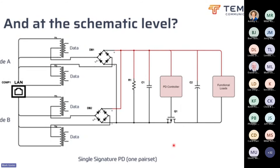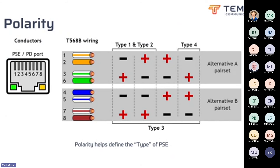Once the power sourcing equipment has detected that little bit of current flowing, it'll go through a hardware process to negotiate the power with the powered device. The powered device will actually pulse loads onto the current from the power sourcing equipment to indicate how much it wants. Up to that point, it can't take more than the basic amount — what we'll call class one. So looking at those various pair sets and how they're configured, we've also mentioned the term types and classes.